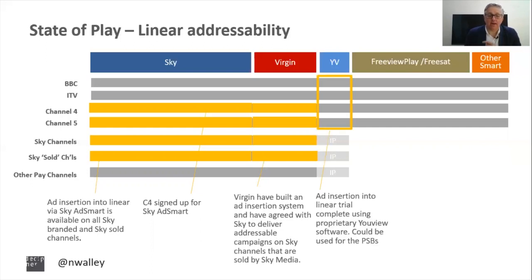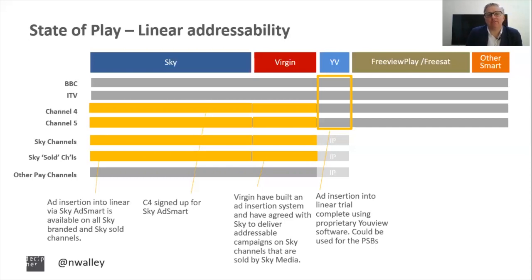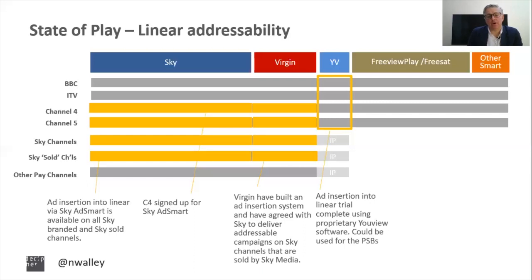There has also been a Uview trial for linear insertion. The tech is their own proprietary technology and uses a different approach to Sky AdSmart — it uses IP to insert advertising into broadcast, delivering addressability under the control of the broadcasters rather than a platform-wide approach. On Uview it will be a broadcaster-by-broadcaster approach once the technology is implemented. The tech is there, it's been built and works, but we're still waiting for the broadcasters to tell us how they're going to roll it out to market.